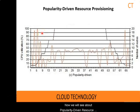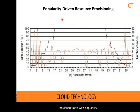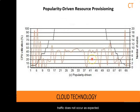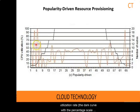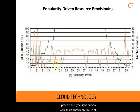Now we will see about popularity driven resource provisioning. In this method, internet searches for popularity of certain applications are used to create instances based on popularity demand. The scheme anticipates increased traffic with popularity, and has minimal loss of QoS if the predicted popularity is correct. Resources may be wasted if traffic does not occur as expected. The popularity provisioning shown in the diagram leads to similar fluctuations with peak VM utilization in the middle of the plot, measured by CPU utilization rate. The torque curve with percentage scale on the left is plotted against the number of VMs provisioned, shown on the right with a maximum of 20 VMs.